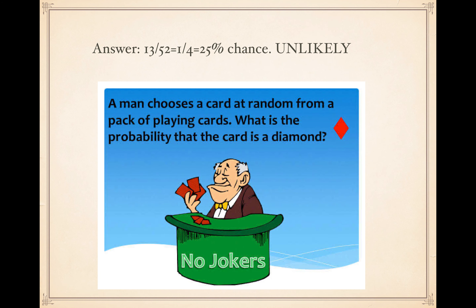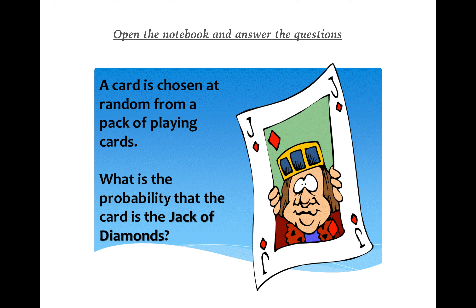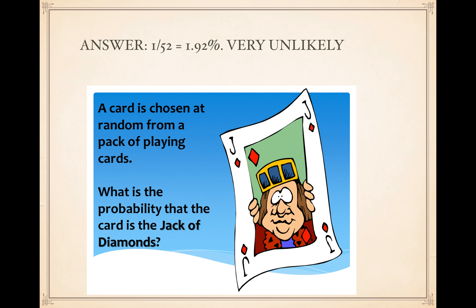The answer is 13 over 52, or one in four — a 25 percent chance of getting a diamond card, so quite unlikely. Next question: a card is chosen at random from a pack of playing cards. What is the probability that the card is the jack of diamonds? Think about this one — it's not just any diamond, it's the jack of diamonds specifically. The answer is one over 52 — there's only one jack of diamonds — so approximately 1.92 or two percent. Quite unlikely.